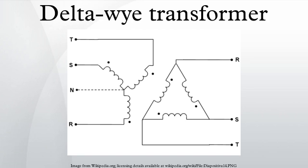A delta-Y transformer is a type of three-phase electric power transformer design that employs delta-connected windings on its primary and Y-star connected windings on its secondary.